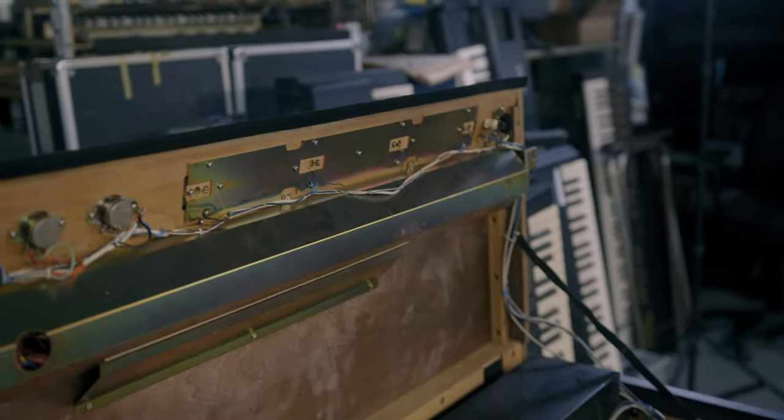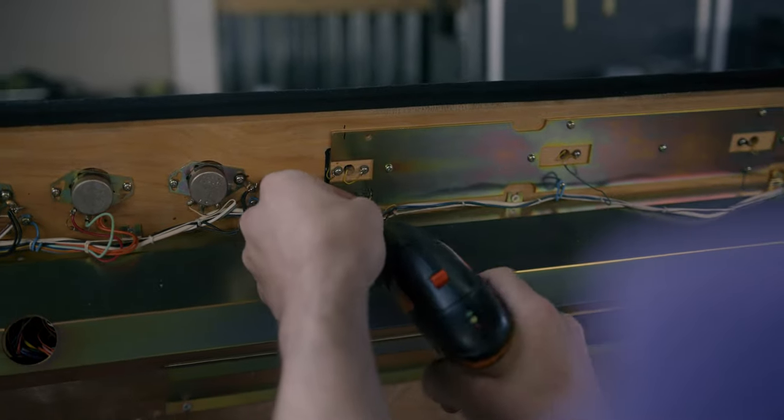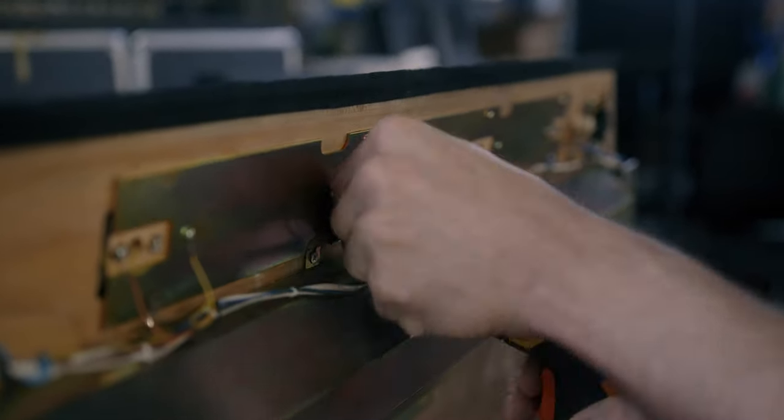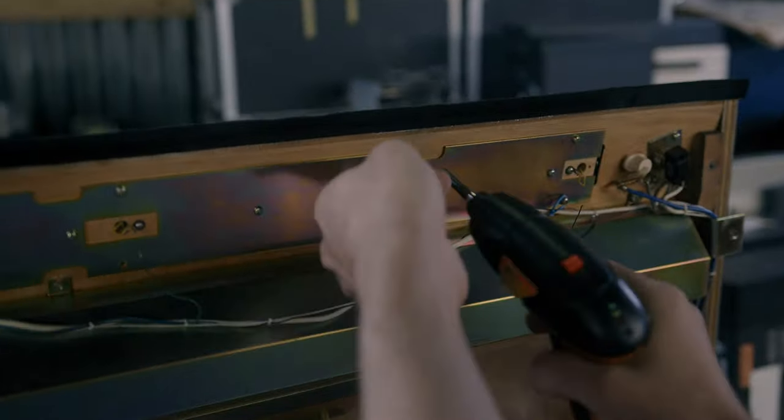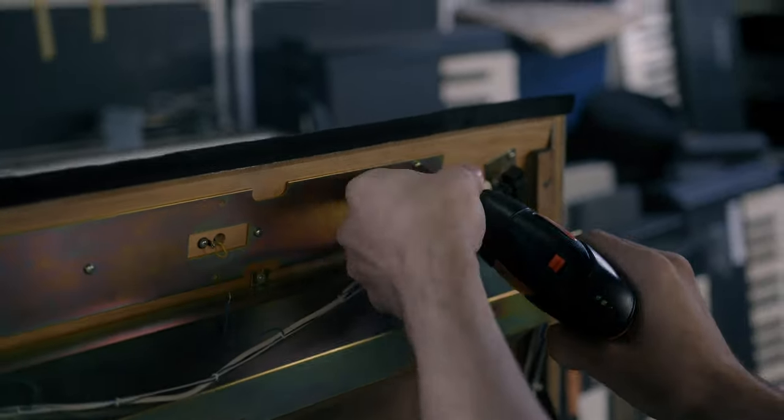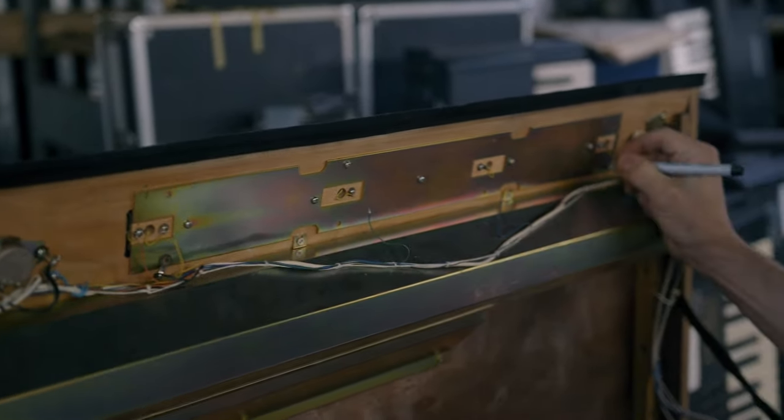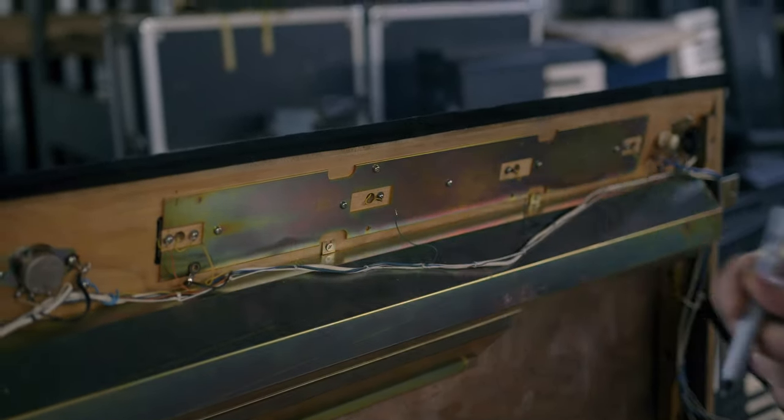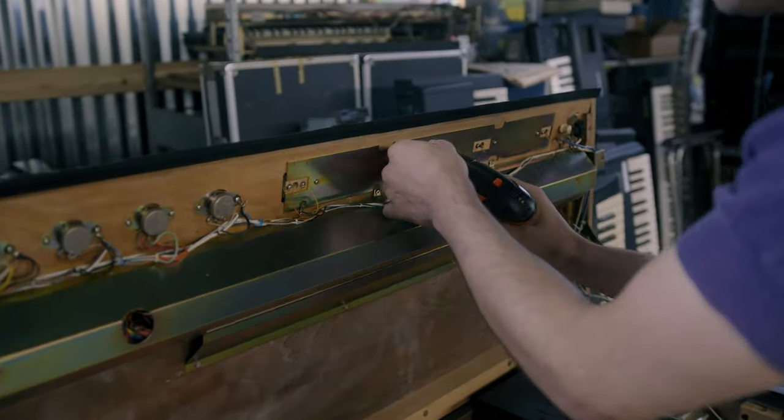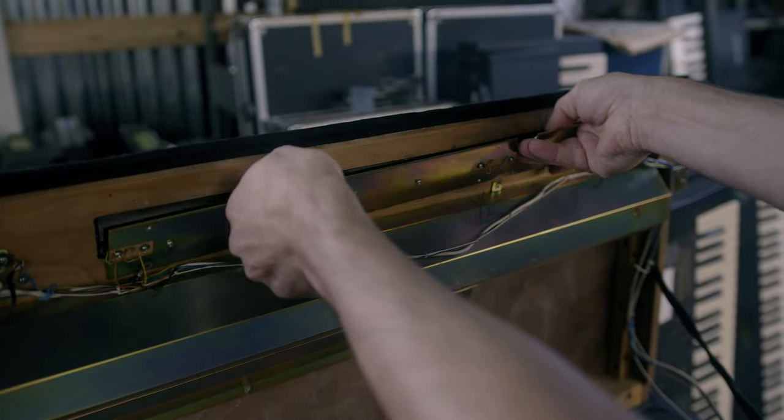Now we have those undone and it's time to remove our eight screws. One thing we can do too is just mark here and here to remember where our little cable ties went. And our one last screw, we'll put these down so I can catch the unit as it comes out.